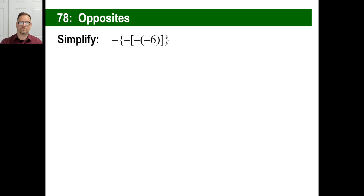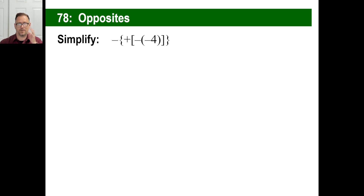Let's do this together. What's the answer going to be? Well, there are four negative signs — or opposite signs — so the answer is positive six. How about this one? There are five, which is an odd number, so the answer is going to be negative seven. Now we threw something funky in there — you still don't mess with the positive sign, that just stays the same. You just count the negatives. That's a negative four; the opposite of negative four is positive four. Positive four is just positive four. But the opposite of positive four is negative four — that's your answer.